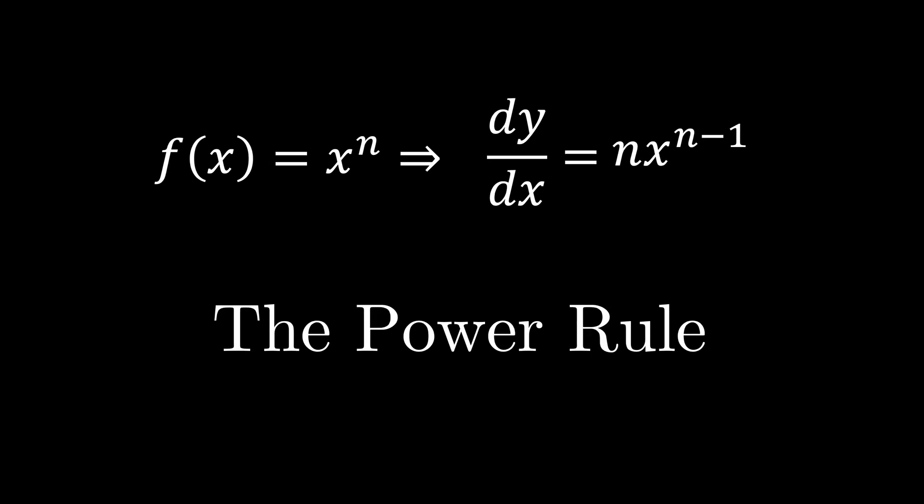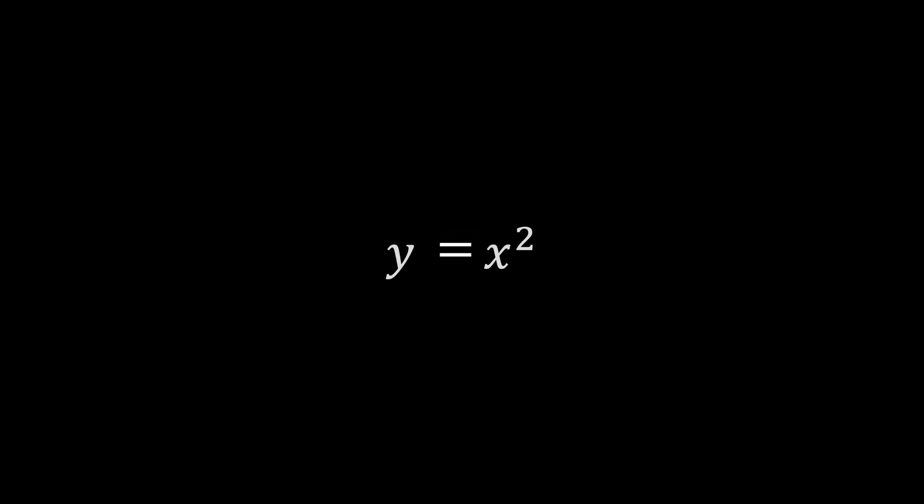To differentiate, multiply by the current power, then subtract 1 from the power. For example, if f of x equals x squared, the derivative is 2x. If f of x equals 2 times x to the power of 4, the derivative is 8x to the power of 3.